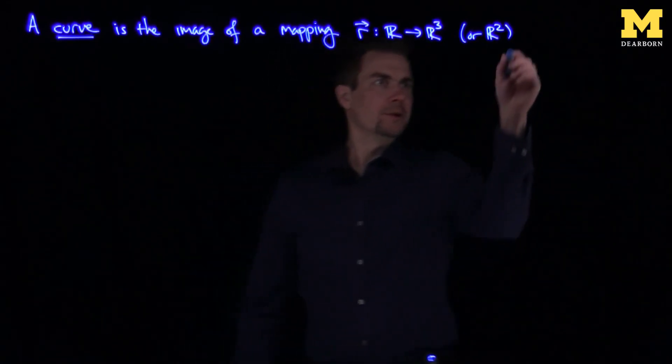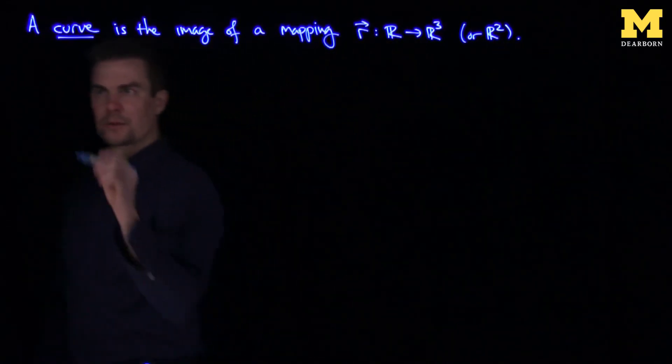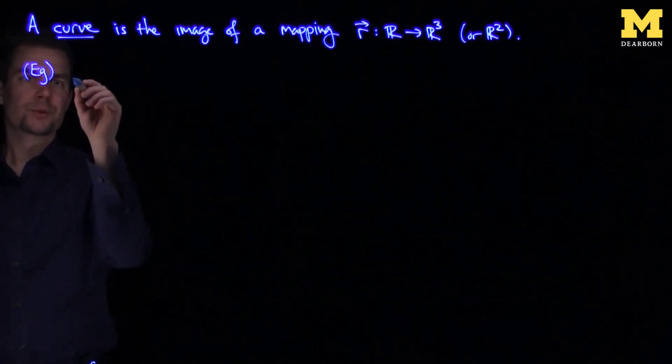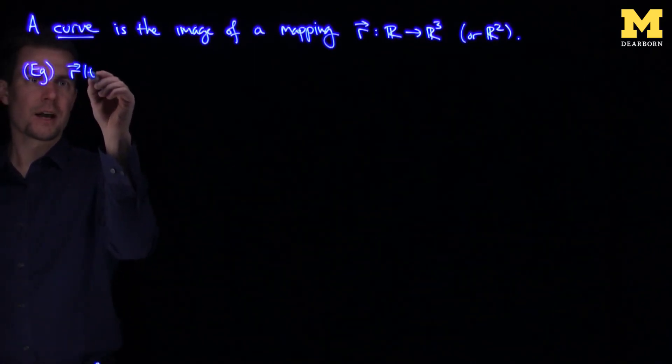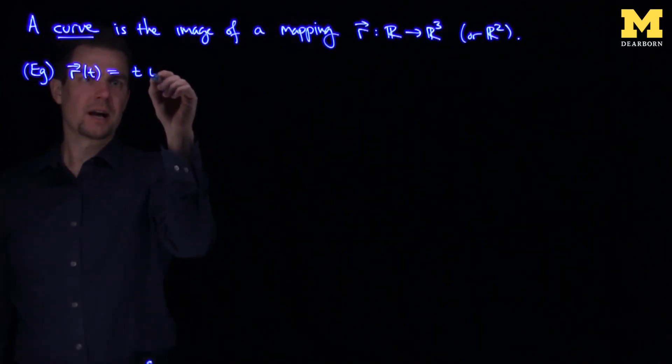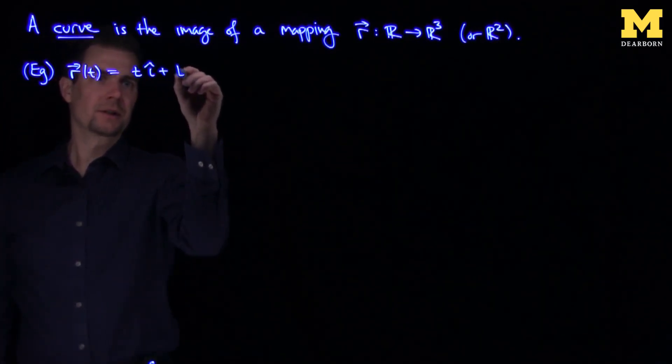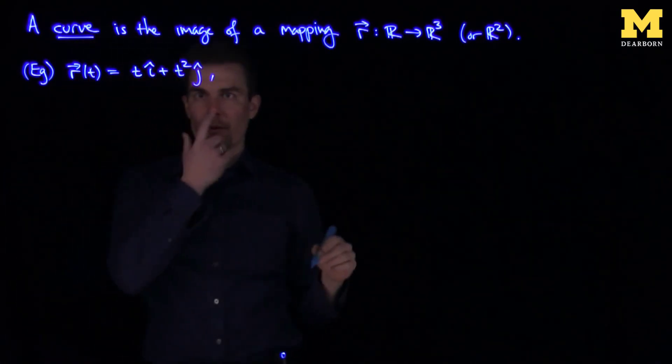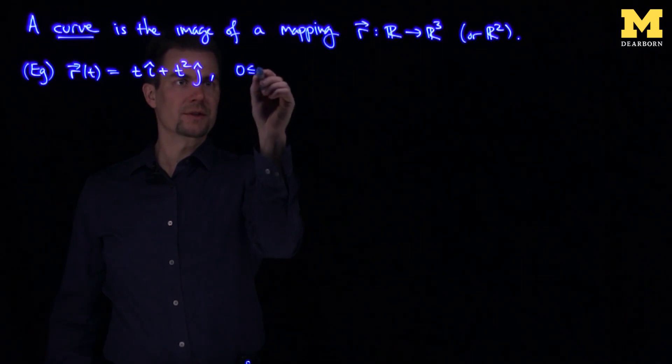In particular, we can write down some examples of curves. So we can say R of t, I input a parameter t, is t i-hat plus t-squared j-hat. And I'll specify the range of my input parameter, t between 0 and 1. This is an example of a curve.